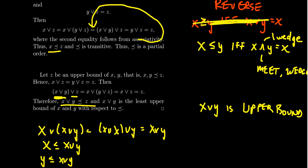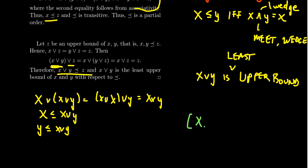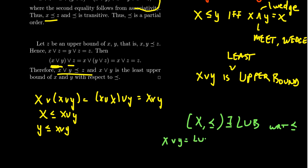So given a semi-lattice, you can put onto it a partially ordered set structure for which you always have least upper bounds — the least upper bound is the join of the elements. This process is also reversible: if you start with a set X with a partial order such that least upper bounds always exist, you can create a semi-lattice by defining X join Y to be their least upper bound. You can then argue that this operation is associative, commutative, and idempotent, giving you a semi-lattice — though I'll leave that as an exercise to the viewer.